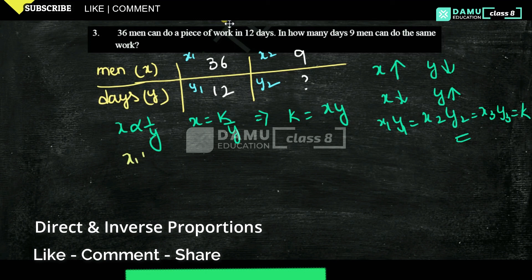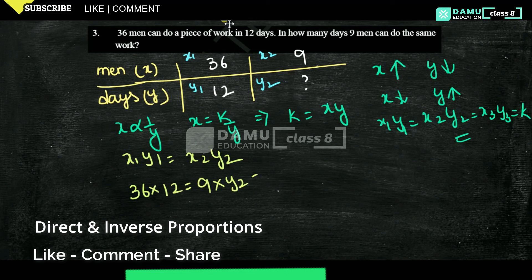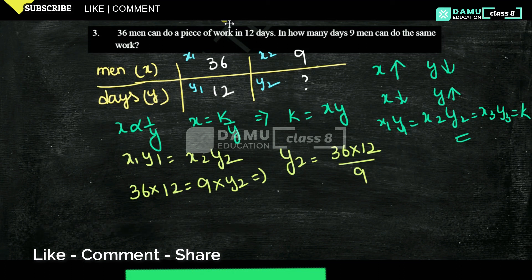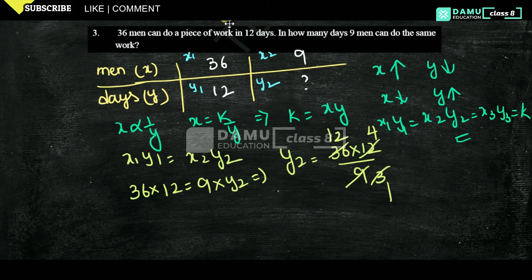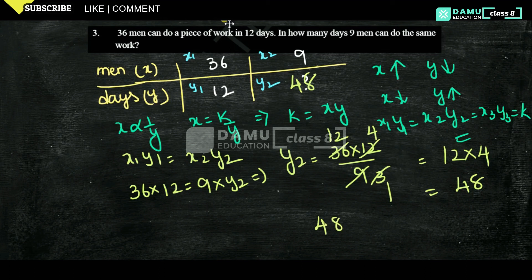So x1·y1 equals x2·y2, which gives 36 times 12 equals 9 times y2. Therefore y2 equals 36 times 12 divided by 9. Simplifying: 36 divided by 9 is 4, and 4 times 12 equals 48. So y2 equals 48 days — it will take 48 days for 9 men to complete the same work.